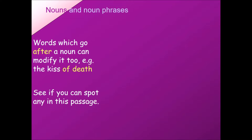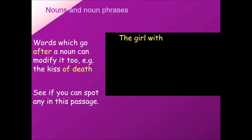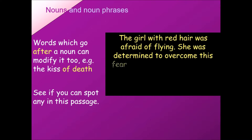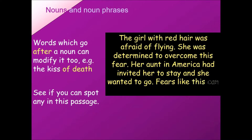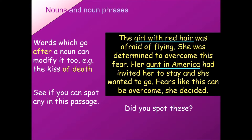Let's look at a passage and notice the differences made by noun phrases. 'The girl with red hair was afraid of flying. She was determined to overcome this fear. Her aunt in America had invited her to stay and she wanted to go. Fears like this can be overcome, she decided.' The noun phrases used include: 'girl with red hair,' 'aunt in America,' and 'fears like this.' Each of these nouns had determiners or other words after it to modify its meaning.